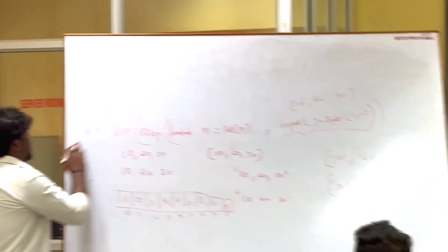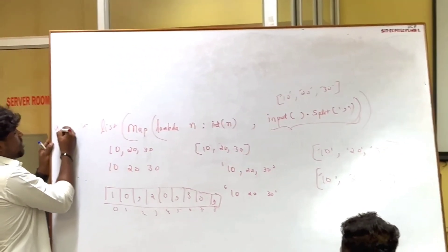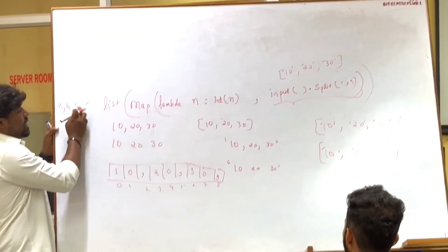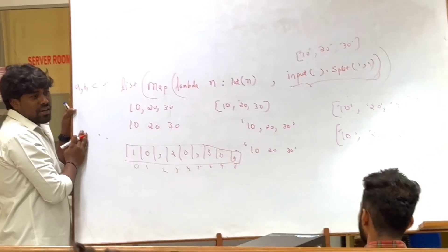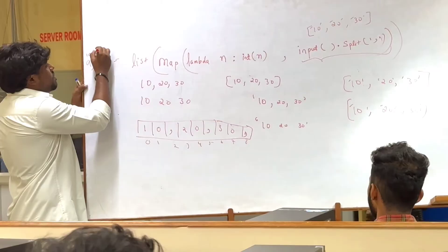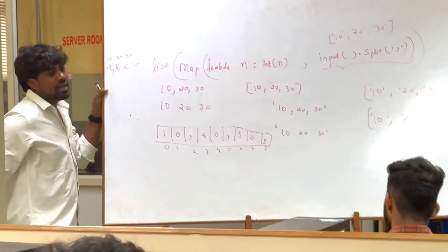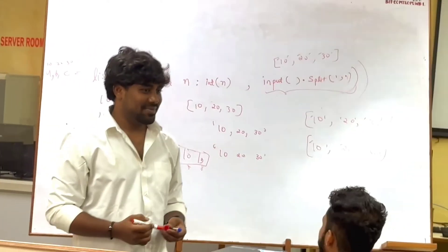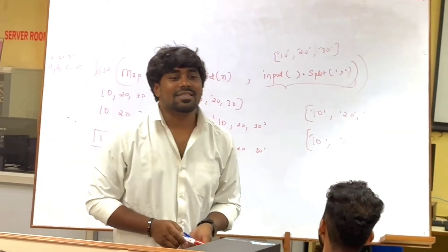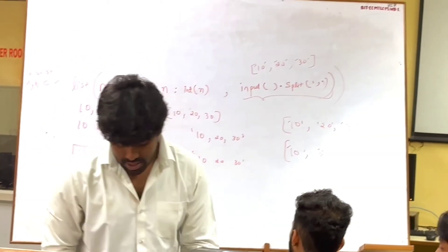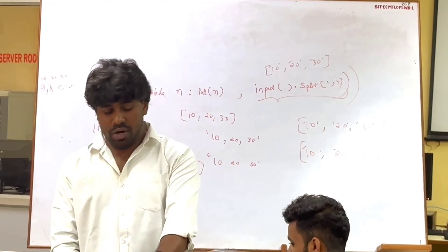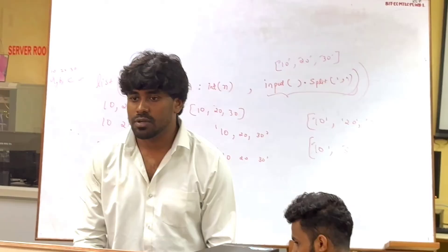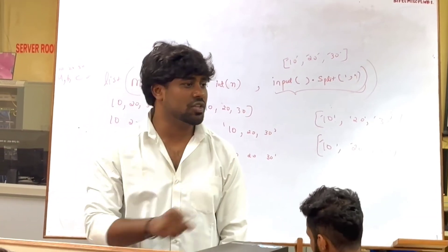You can also unpack it: A, B, C = ... and A is given 10, B is given 20, C is given 30. You can read multiple values also. You can do it by looping too, but this one-line approach is very easy — in one single shot you can do it.